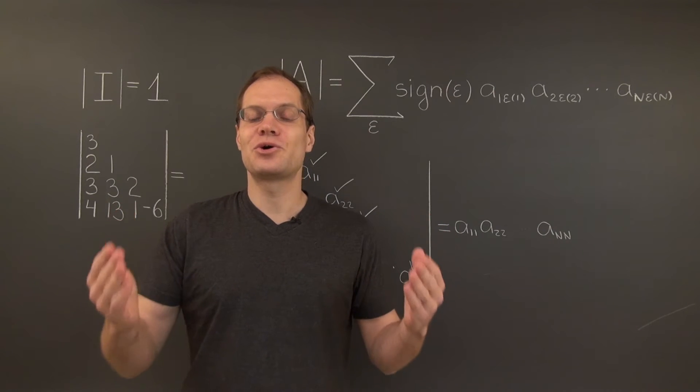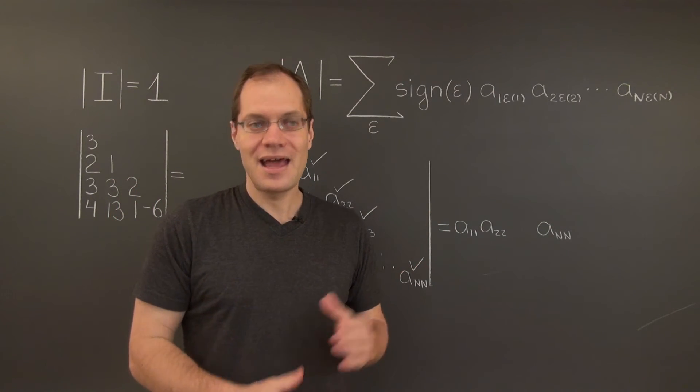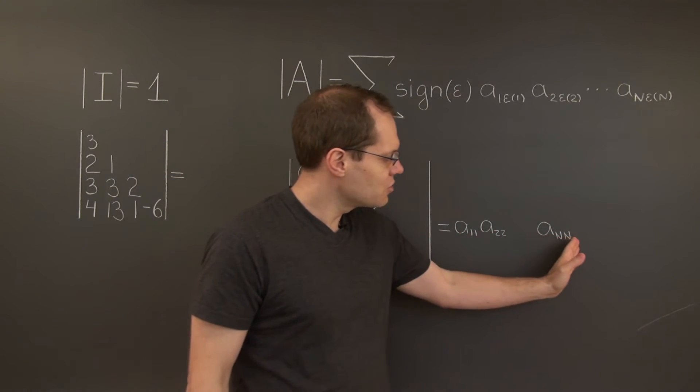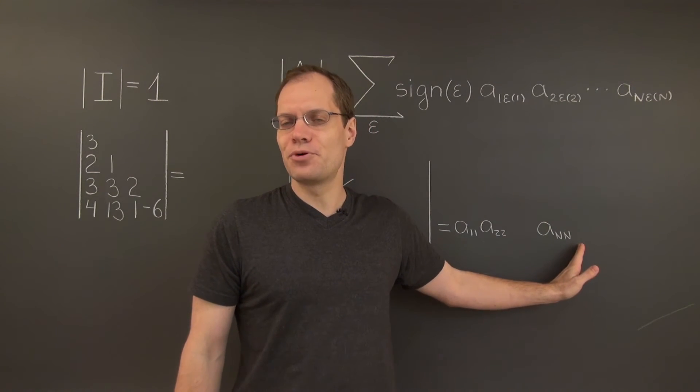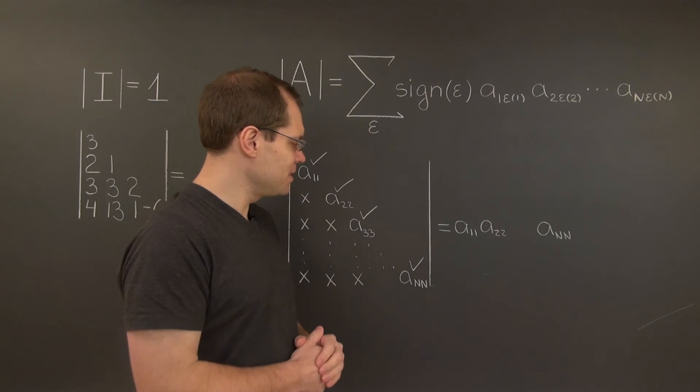So out of the n factorial terms, only a single term survives, and it's the term consisting of the diagonal entries, and because this term represents the zero permutation, whose parity is even, it comes with a plus sign.